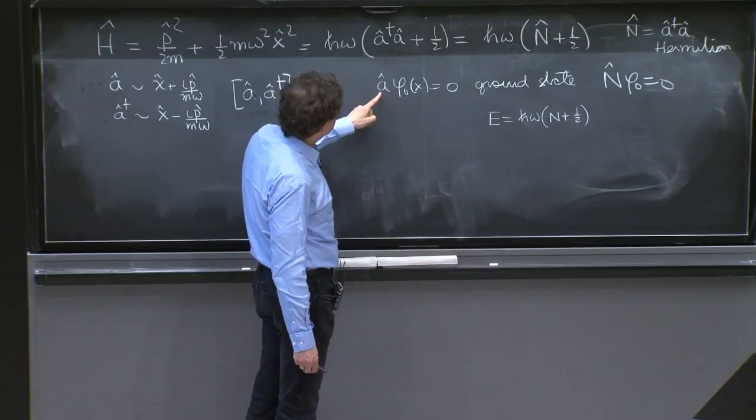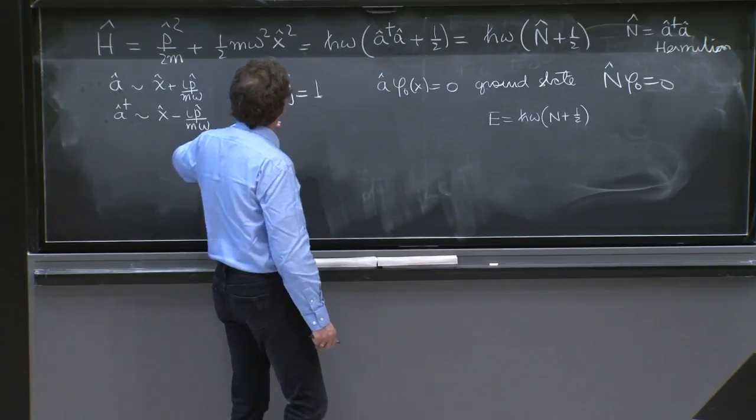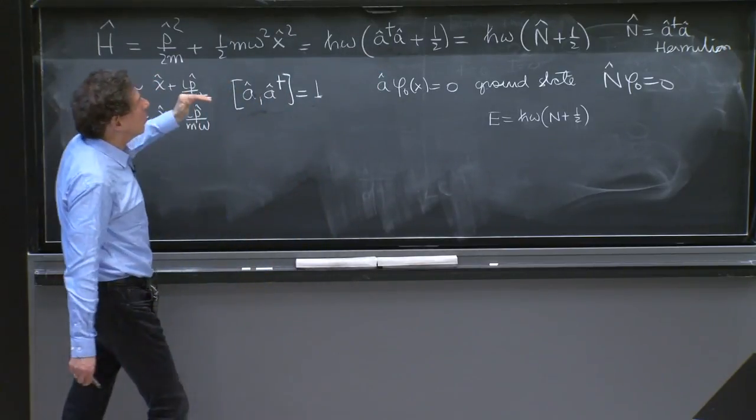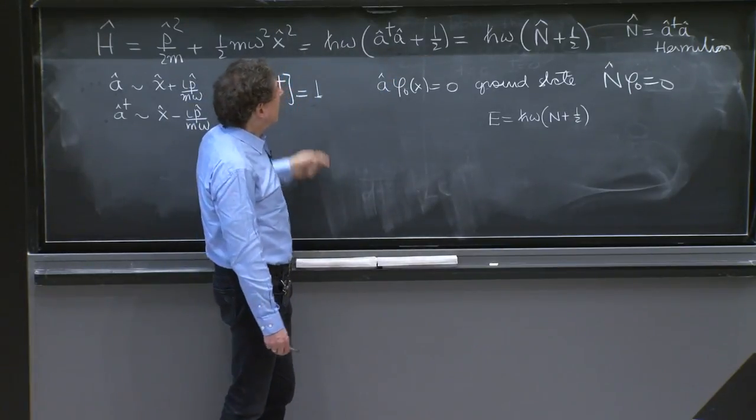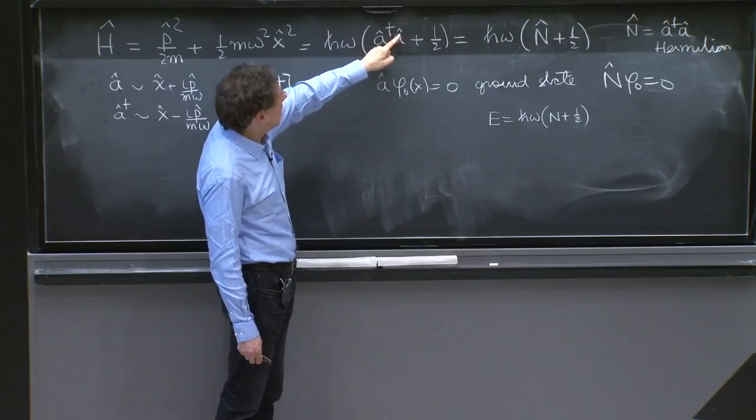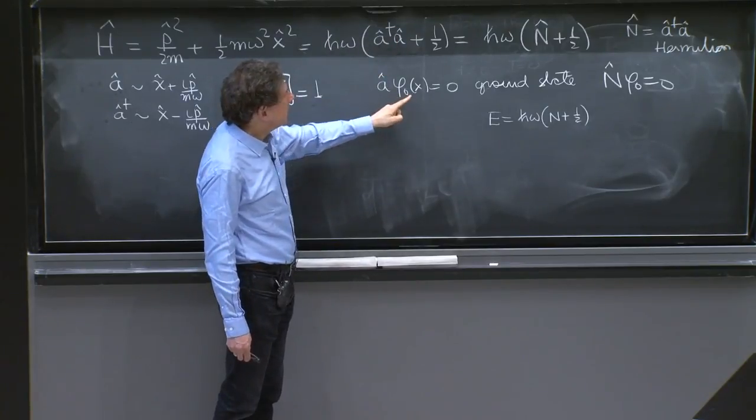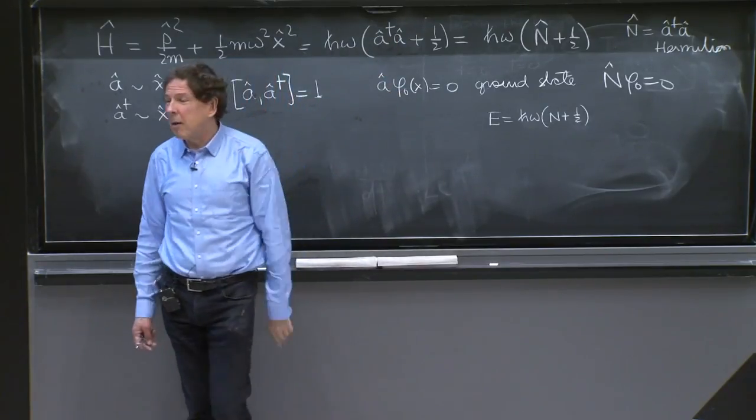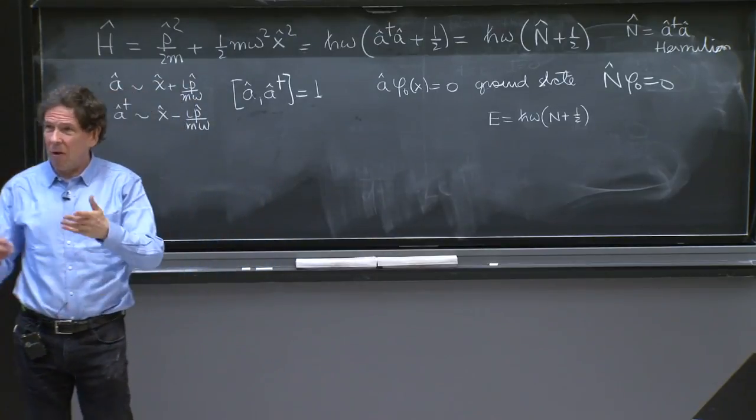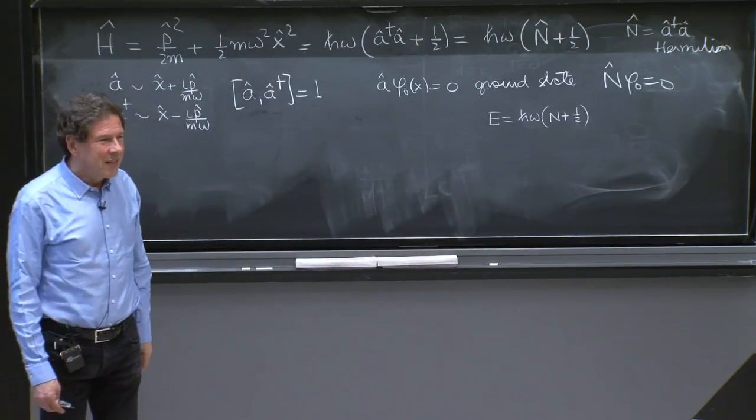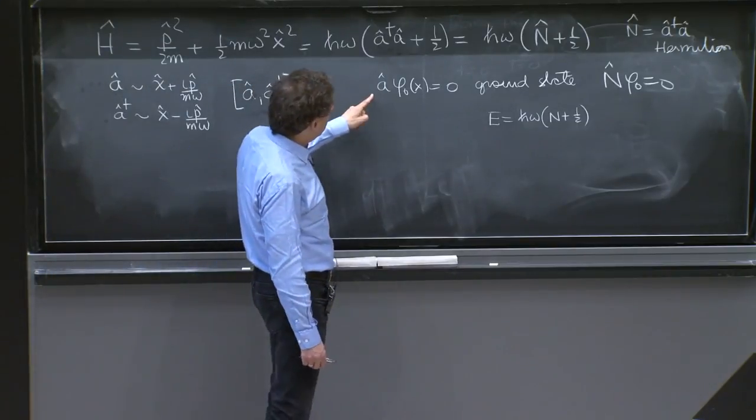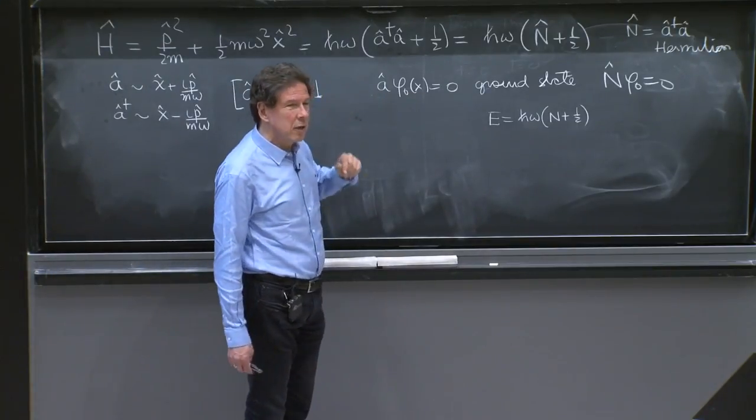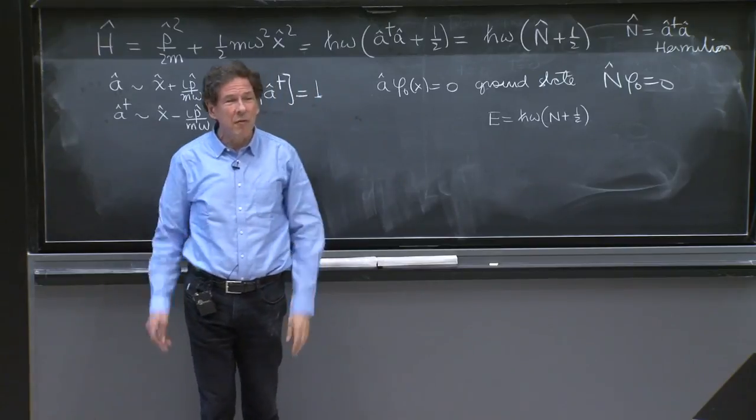Finally, we also showed that while the energy of any state would have to be greater than h-bar omega over 2, if you had a state that is killed by a hat, it would have the lowest allowed energy, which is h-bar omega over 2. And therefore, that is the ground state. And we looked at this differential equation, and we found this Gaussian wave function.